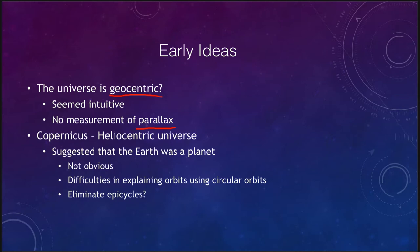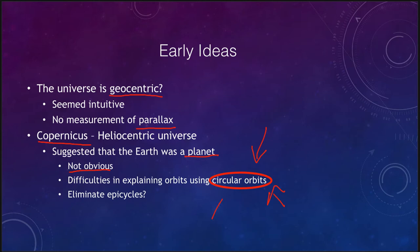Copernicus gave us the idea of a heliocentric universe and really suggested that the Earth was a planet just like the other planets that were known. However, this was not obvious, and there were still difficulties because we used circular orbits — and that is one of the keys here, that we were stuck on circular orbits. As long as you used circular orbits you could not easily explain the motions of the planets. Copernicus's followers were not able to eliminate epicycles because they needed them not to explain retrograde motion, but to explain the variations that occurred because the orbits were not truly circular.